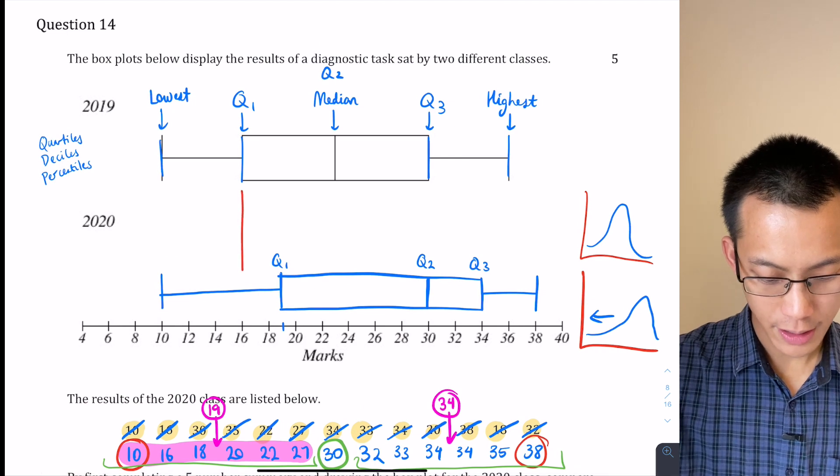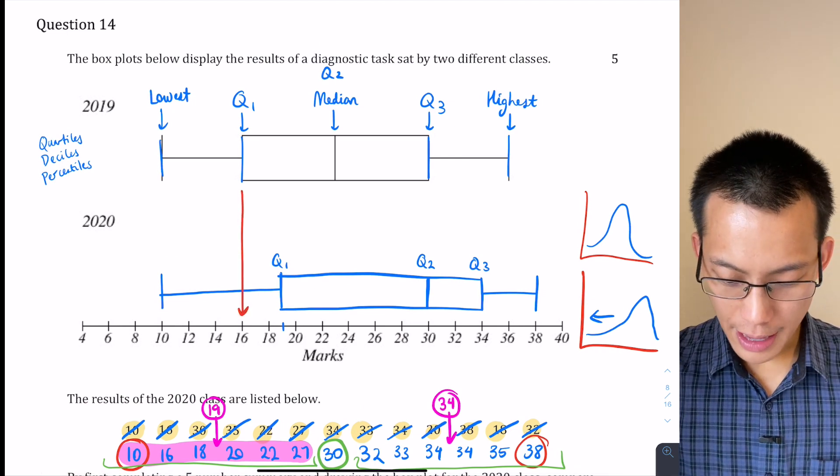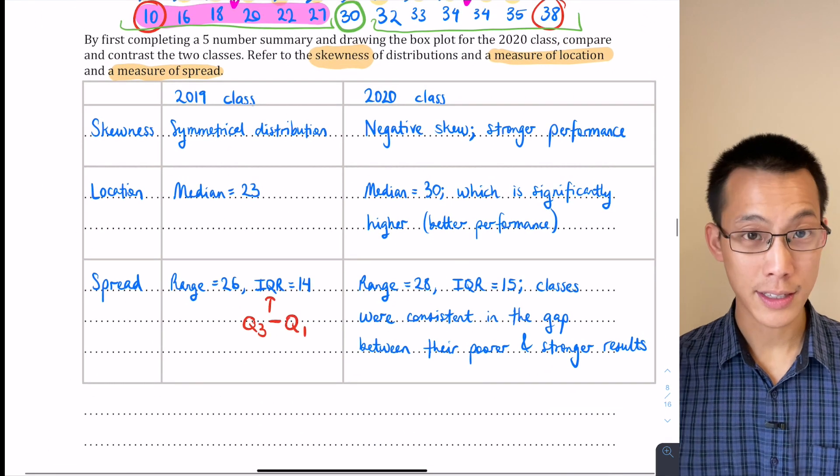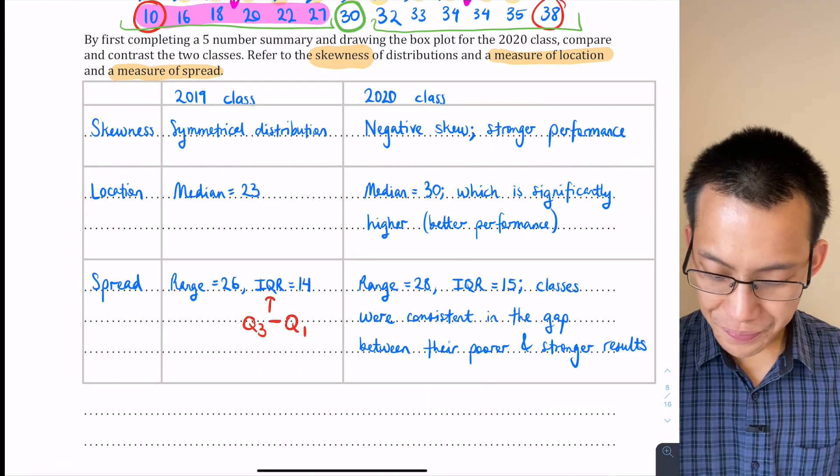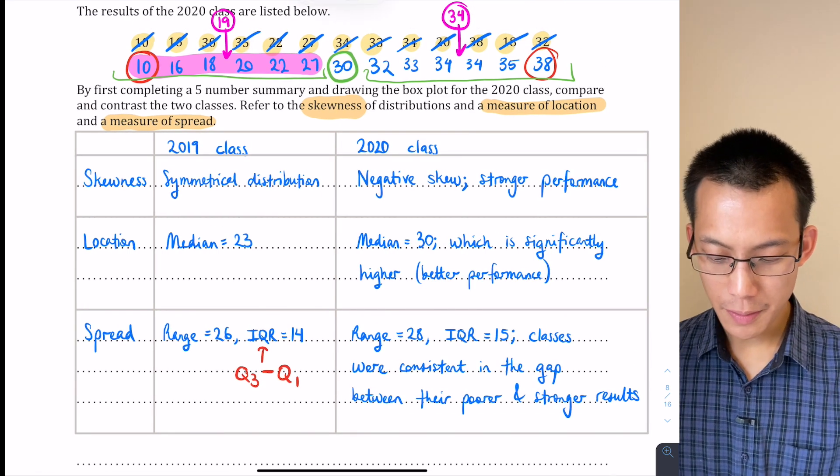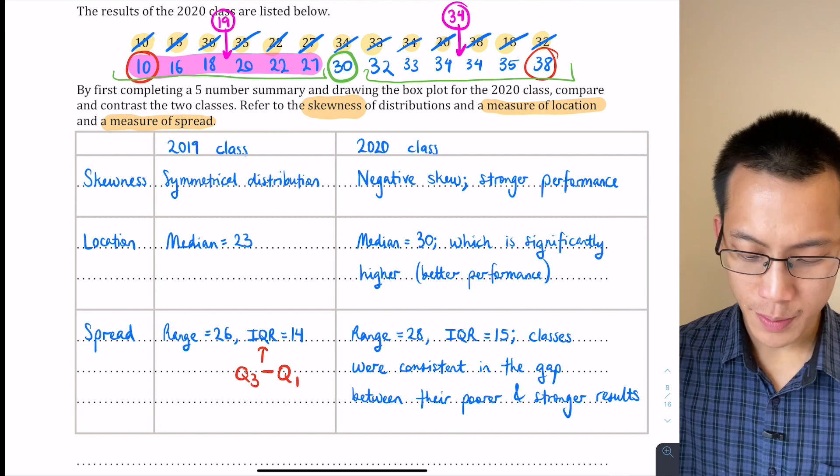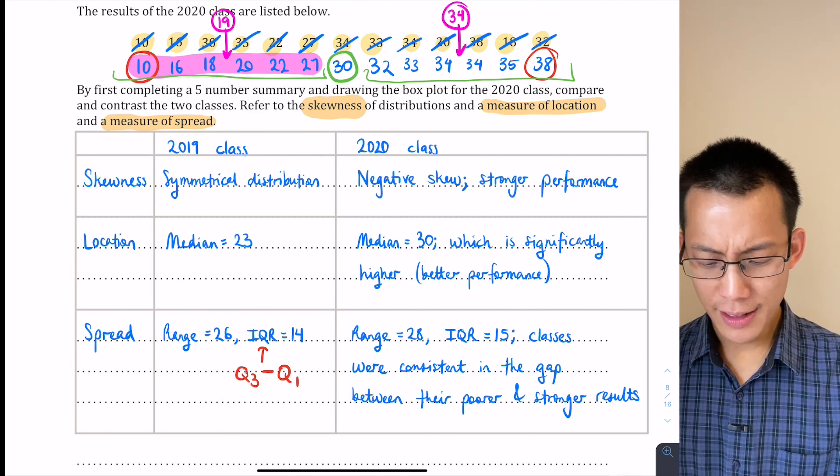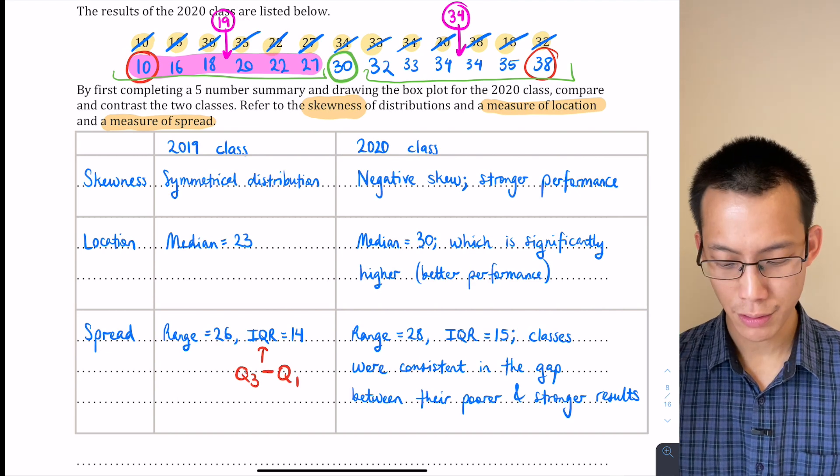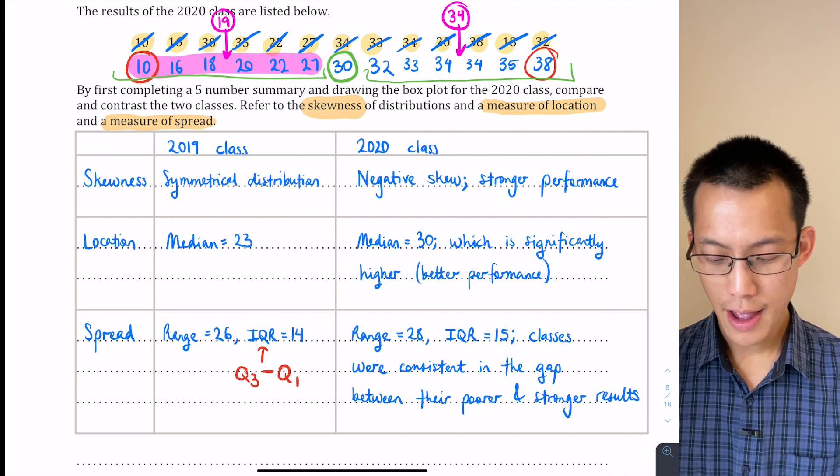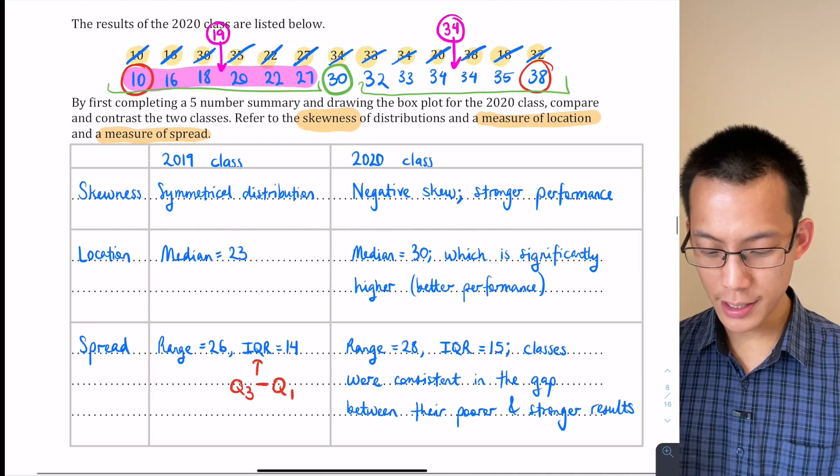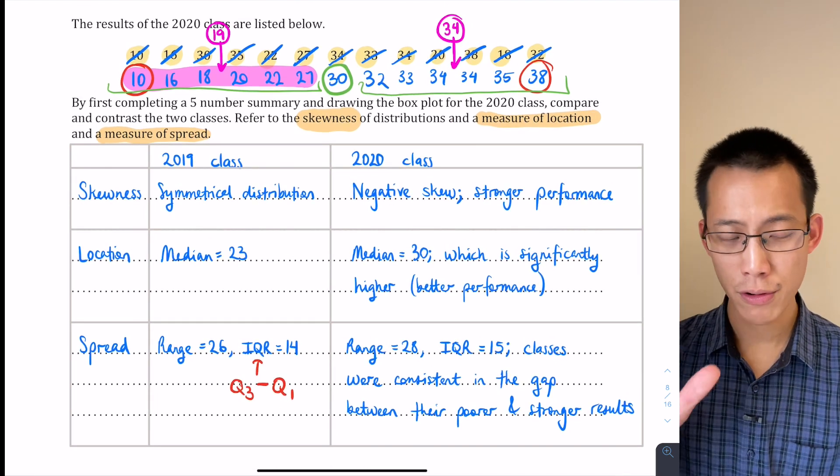So you can go ahead, read from the graph above. It might help you if you go and say, oh, Q1, where is that? It's going to be 16 here, and then it is 30 over here, so 30 take away 16, you can see where I got the 14 from. You go ahead and calculate it for 2020 as well, and you get these results. Now, it looks to me like the range and the interquartile range are very, very similar between the two classes. So that's not a point of contrast, that's a point of comparison. So you can see here I said the classes were consistent in the gap between the poor results and the stronger results.